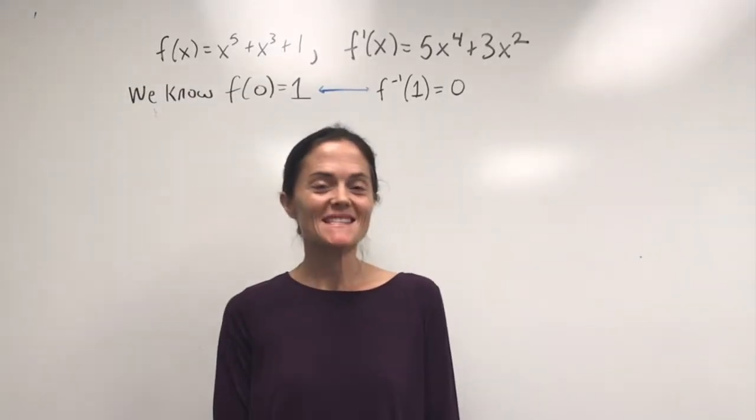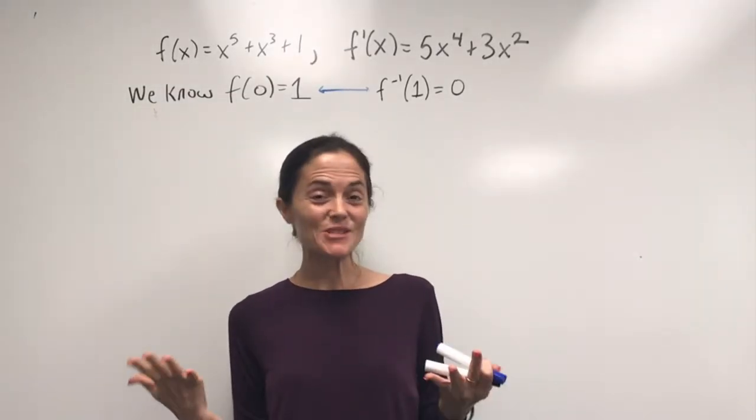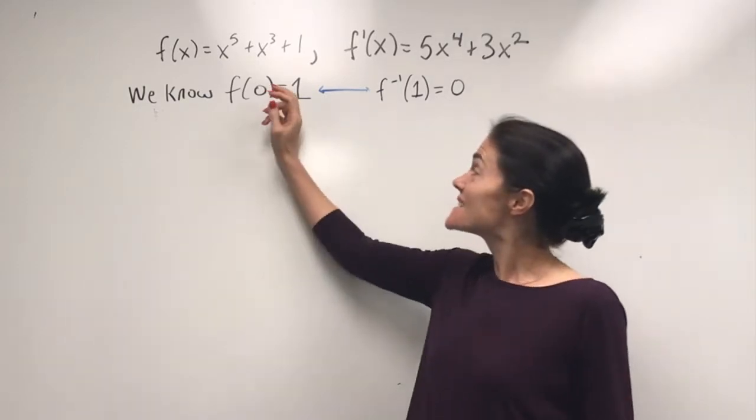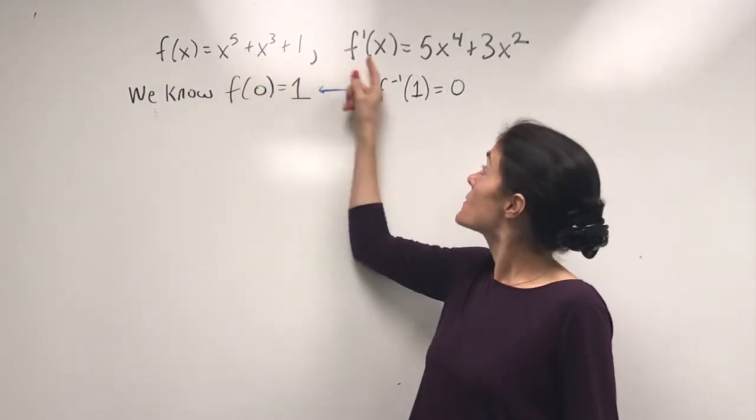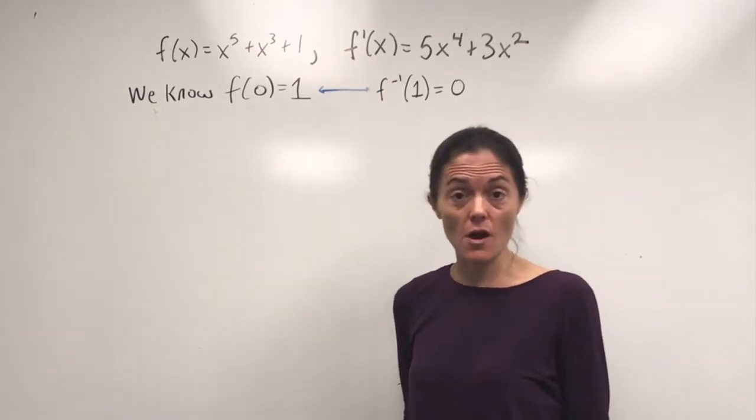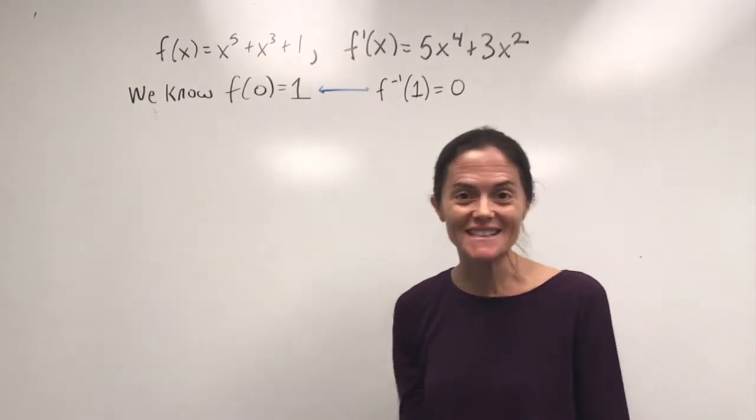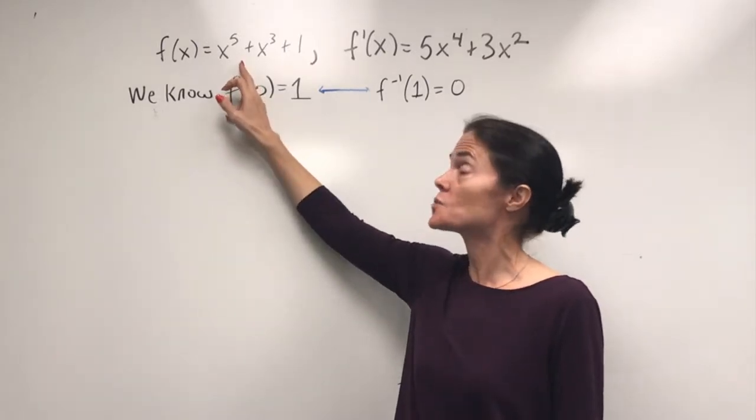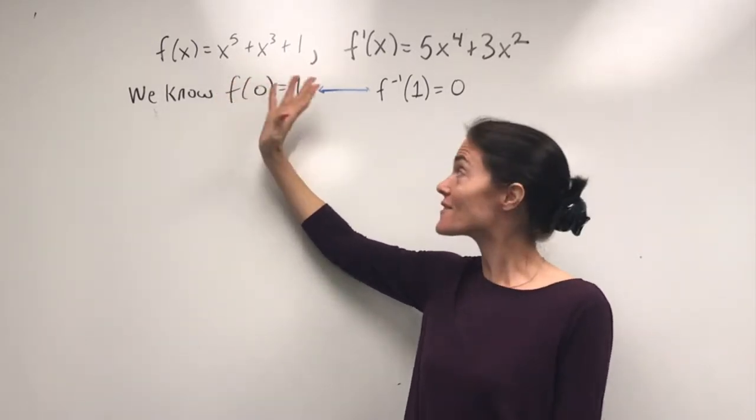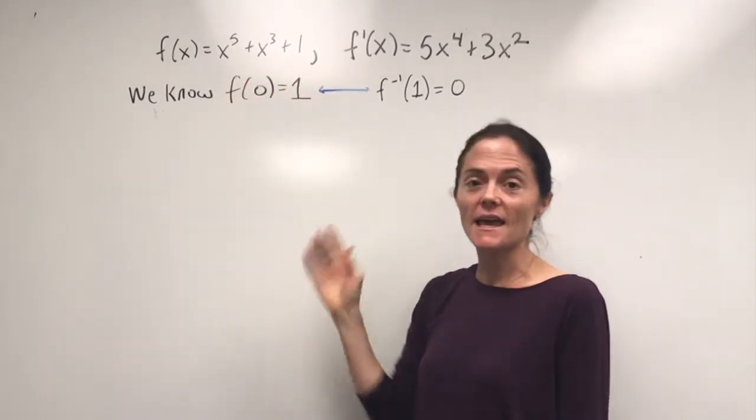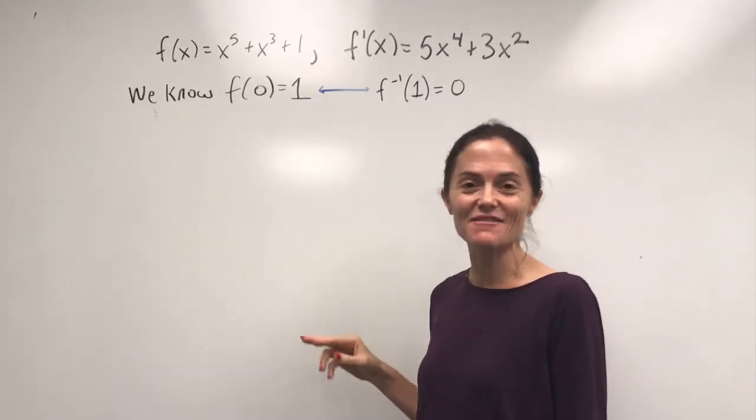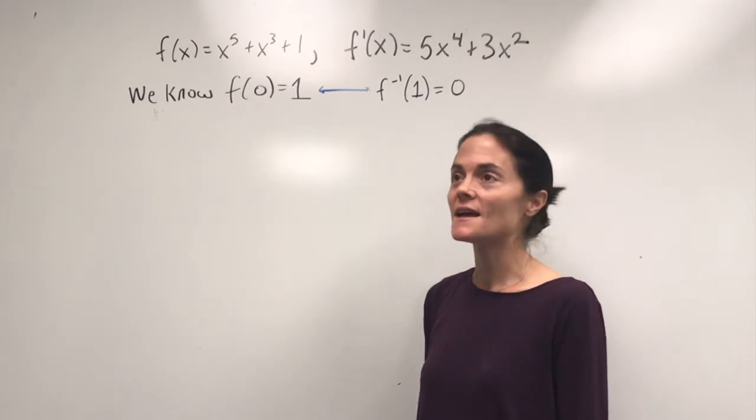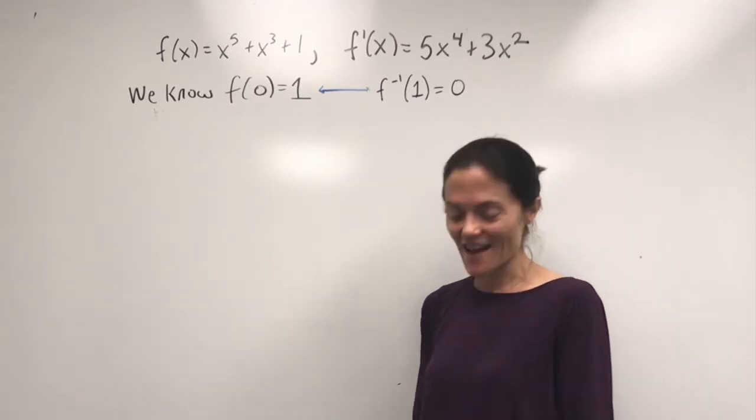Let's continue with this example for a moment because it's super cool. So this function, even though the derivative is 0, f prime of 0 is 0 as we discussed, this function is 1 to 1 everywhere. It's kind of like x^3 where you have a place where the derivative is 0, but you're still 1 to 1.